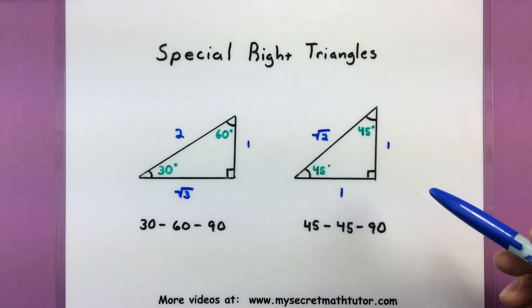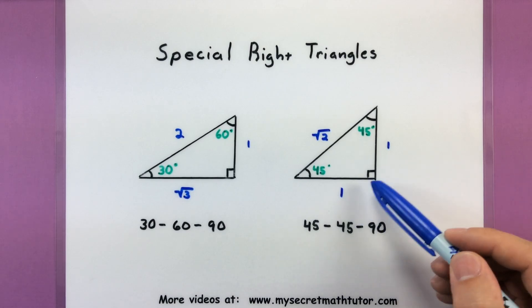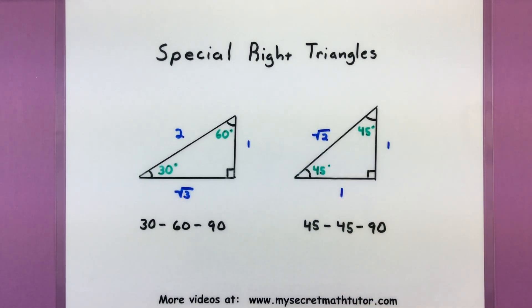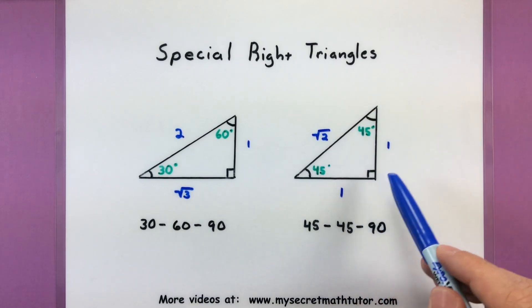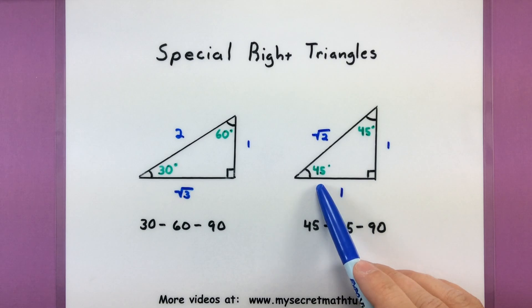Now in the same fashion we could have a 45-45-90 triangle. Its sides are 1, 1, and square root of 2. The longest side is our square root of 2, that's our hypotenuse, and you'll notice that both legs are 1. They're the same because both of our angles are the same. They're both 45 degrees.